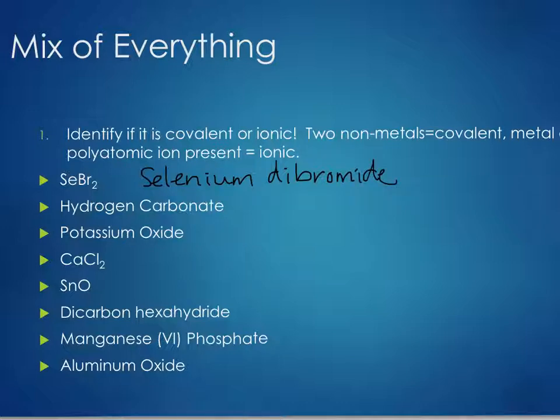For hydrogen carbonate: there's no '-ide' ending — that's a clue you have a polyatomic ion, so this is ionic. The carbonate ion (CO₃²⁻) has a minus two charge, according to the polyatomic ion chart. But a compound must be neutral, so we need to find the right combination of hydrogen and carbonate. Hydrogen carbonate as a listed ion is HCO₃⁻, but if asked for the compound it must be neutral.